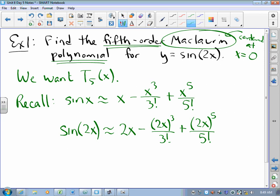If we simplify, sure we can simplify. That's 2x - 8/6 x³ + 32/120. I have no idea what 32 over 120 is. That's 8/30 x⁵.